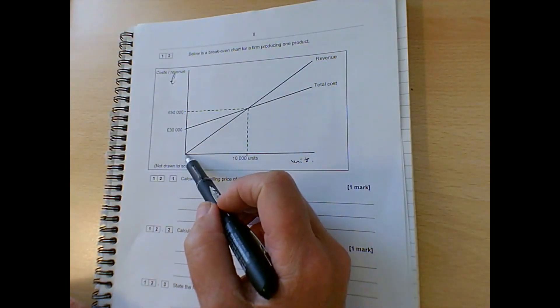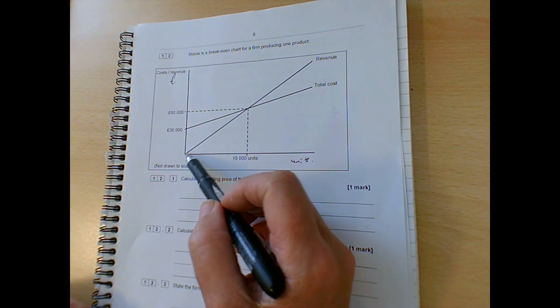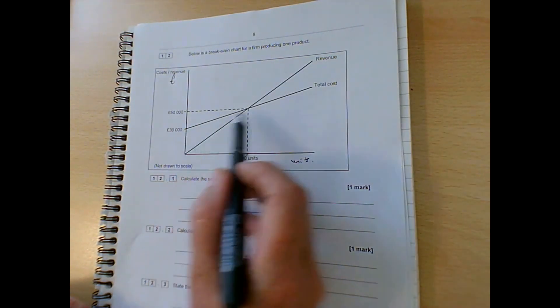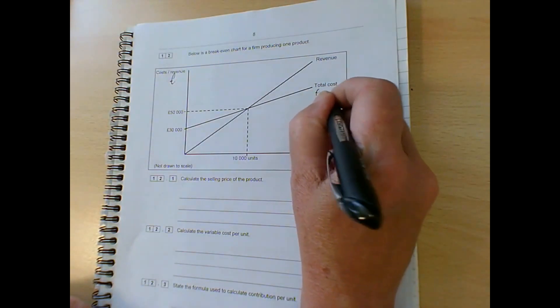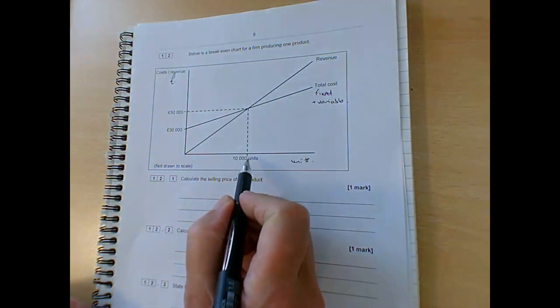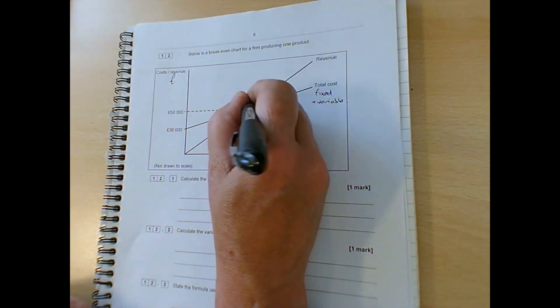Normally we would have the revenue starting at zero. Obviously if we don't sell anything, we don't make any money, going in a straight line. And then we've got total cost, so that's fixed plus variable going in there. And the point at which they intersect is obviously the breakeven point.